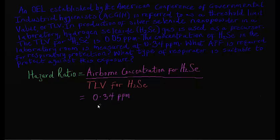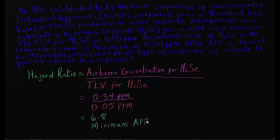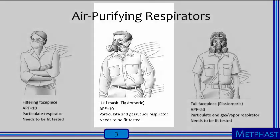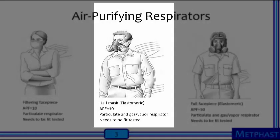Thus, the hazard ratio equals 0.34 parts per million divided by 0.05 parts per million, and the answer is 6.8. For a hazard ratio of 6.8, the minimum APF of 10 should be chosen. A suitable respirator against this gas exposure is the half-mask elastomeric respirator with an appropriate cartridge for hydrogen selenide.